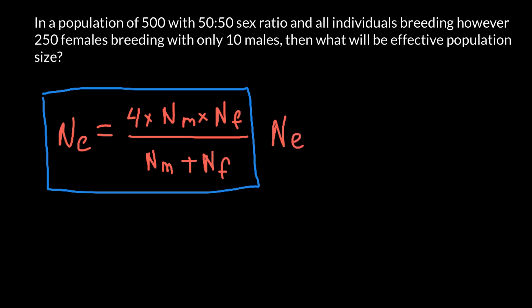So again, effective population size would equal to 4 multiplied by number of males that participate in breeding and there are 10 males and 250 females.